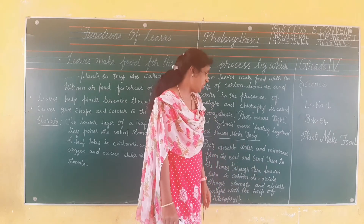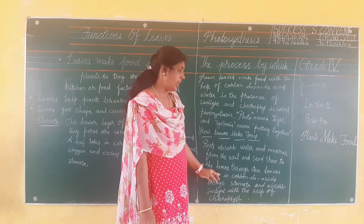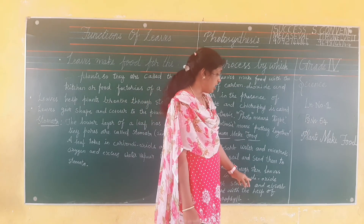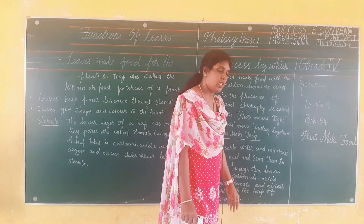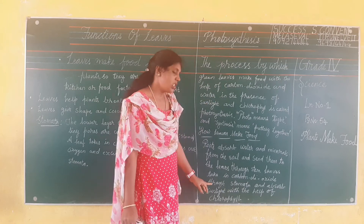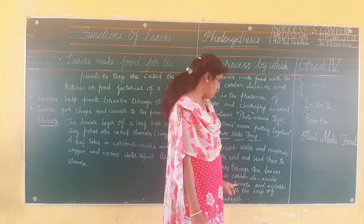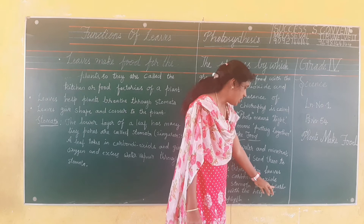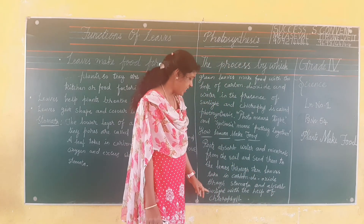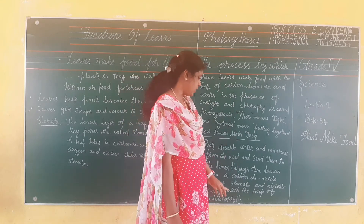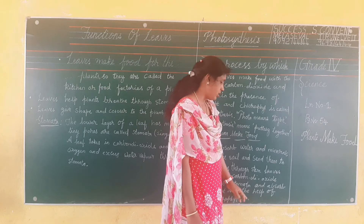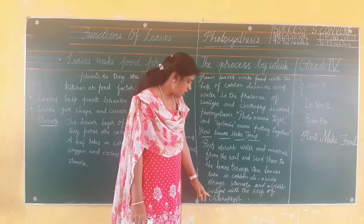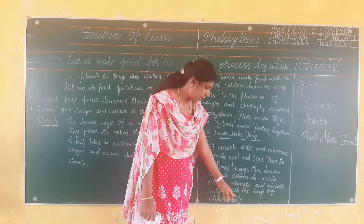Leaves take in carbon dioxide through stomata and absorb sunlight with the help of chlorophyll.